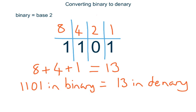In other words, 1, 1, 0, 1 is how we write the number 13 in binary.